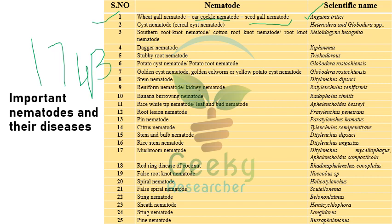Questions will be asked like: which of the following is a wheat seed gall nematode, or wheat ear-cockle nematode, or seed gall nematode? The answer is Anguina tritici. The next ones are cyst nematodes — Heterodera and Globodera — both species are cyst nematodes. The next is the southern root knot nematode, cotton root knot nematode, or root knot nematode.